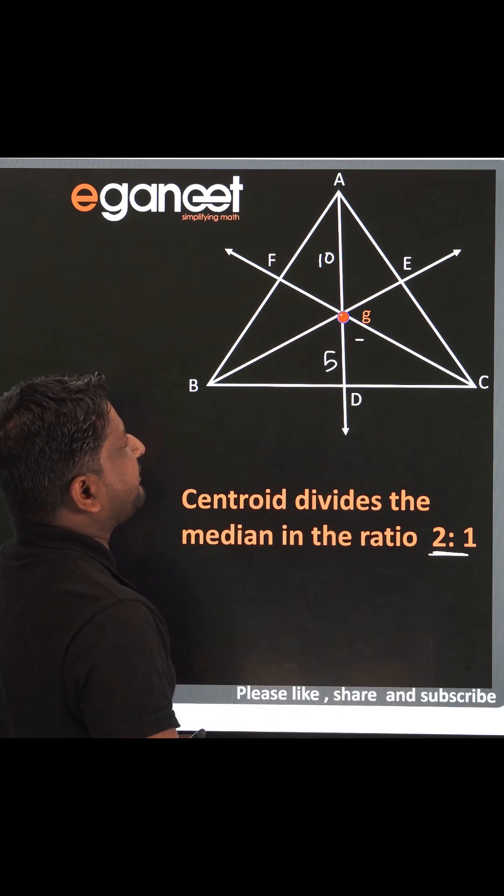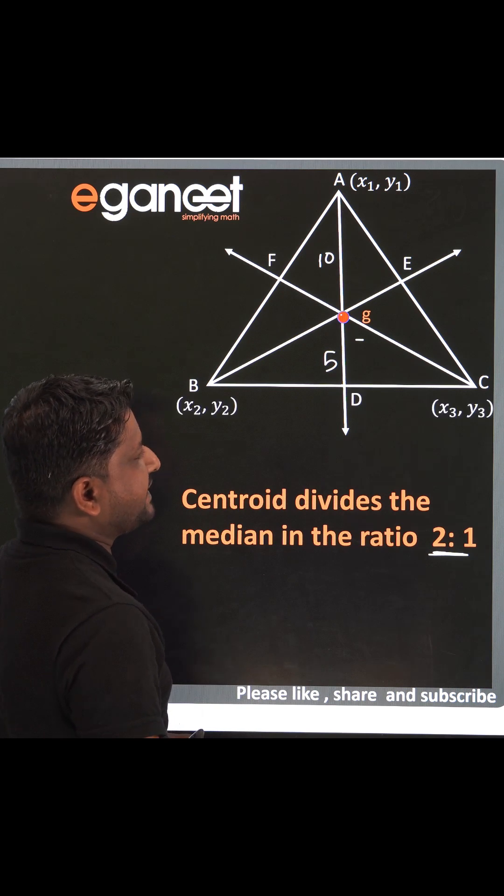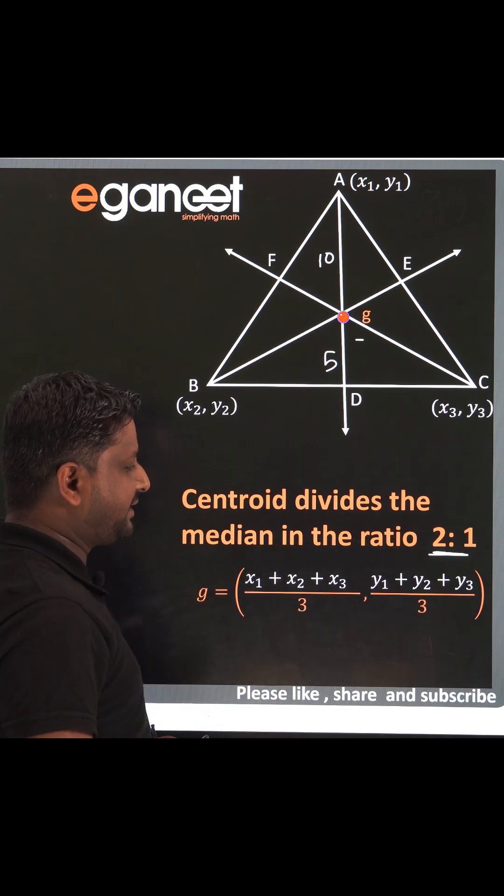Well, if A has coordinate x1, y1, B has coordinate x2, y2 and C has coordinate x3, y3, then this is the formula of the centroid.